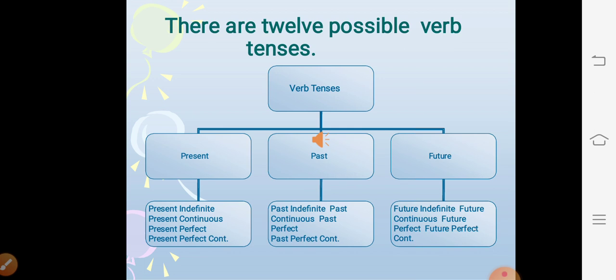There are twelve possible verb tenses. Under present: present indefinite, present continuous, present perfect, present perfect continuous. Under past: past indefinite, past continuous, past perfect, past perfect continuous. Under future: future indefinite, future continuous, future perfect, and future perfect continuous.